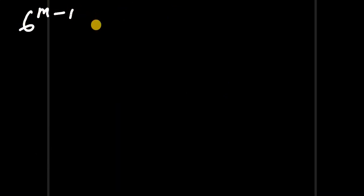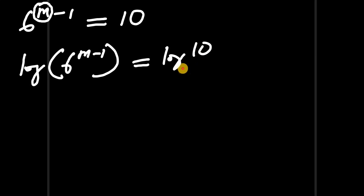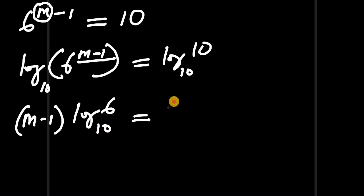Moving to the next slide, we have 6 to the power of (m minus 1) equals 10, and we need to find the value of m. To do this, we introduce logarithms — we take the log of both sides of the equation. So we get: (m minus 1) times log of 6 to the base 10 equals log of 10 to the base 10.